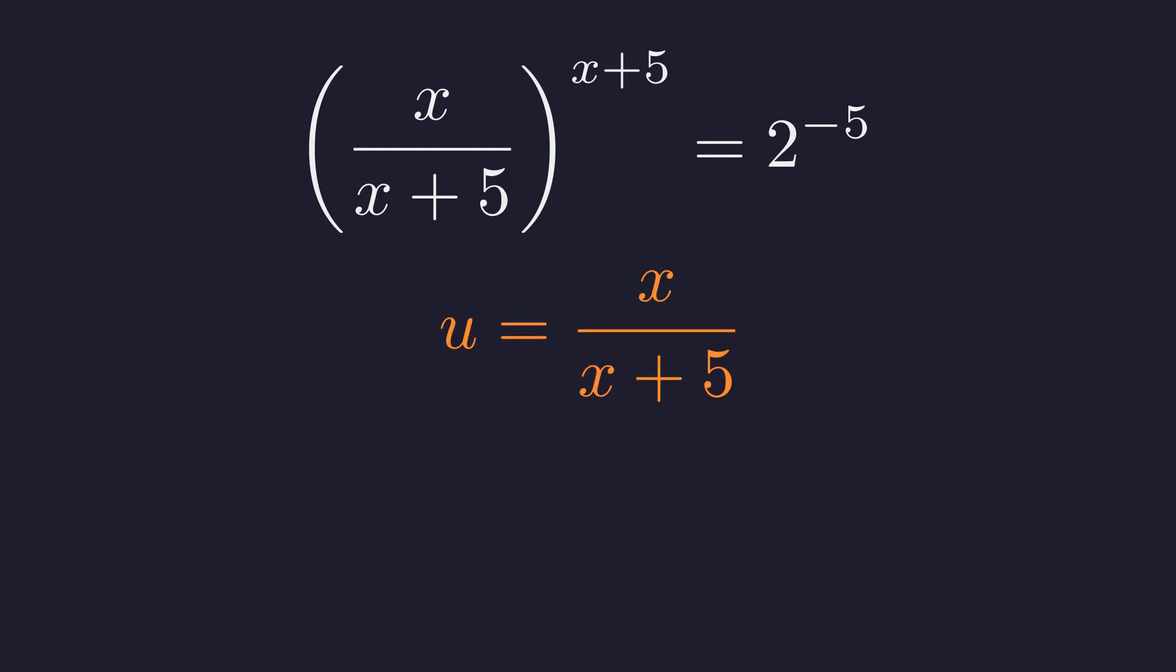Let's define a new variable u to represent this base fraction. We must now express the exponent in terms of u. We start by taking the reciprocal. 1 over u equals x plus 5 divided by x. We can decompose this fraction into two parts. This simplifies to 1 plus 5 over x.